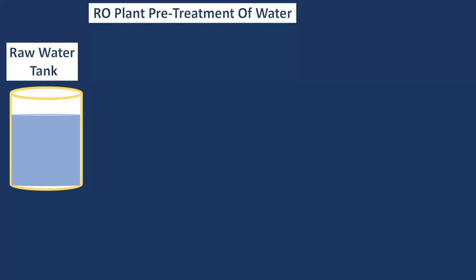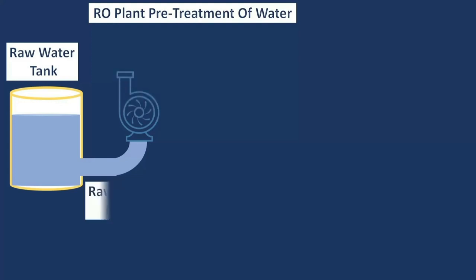Water is supplied to the plant from the raw water tank by the raw water pump. A single-stage centrifugal pump is used for this purpose. Sometimes the raw water pump is also called the RO feed water pump.